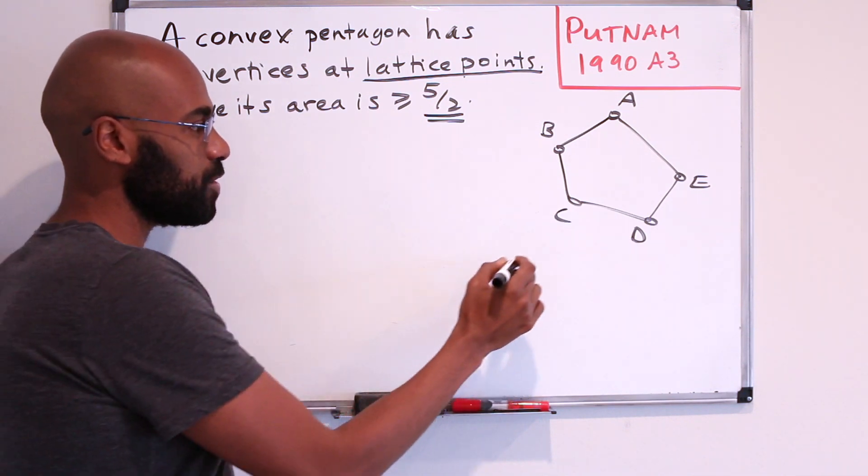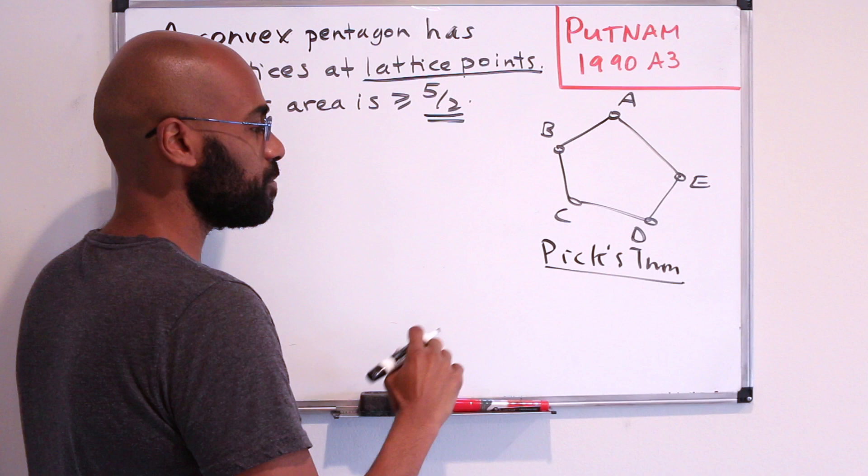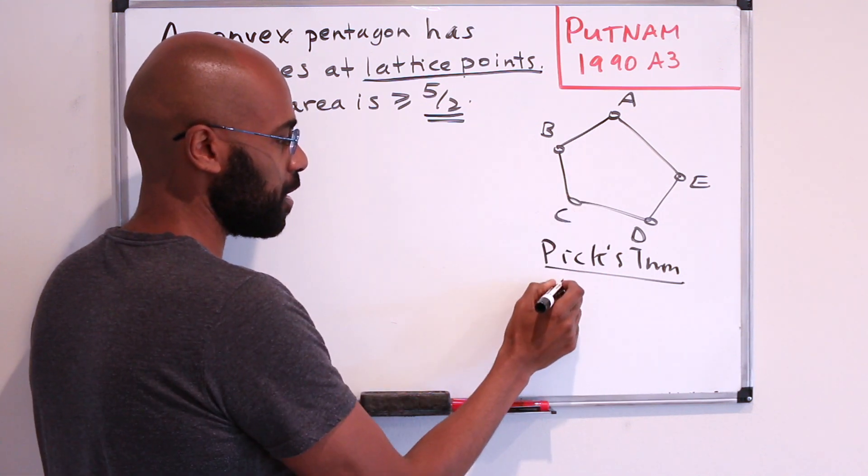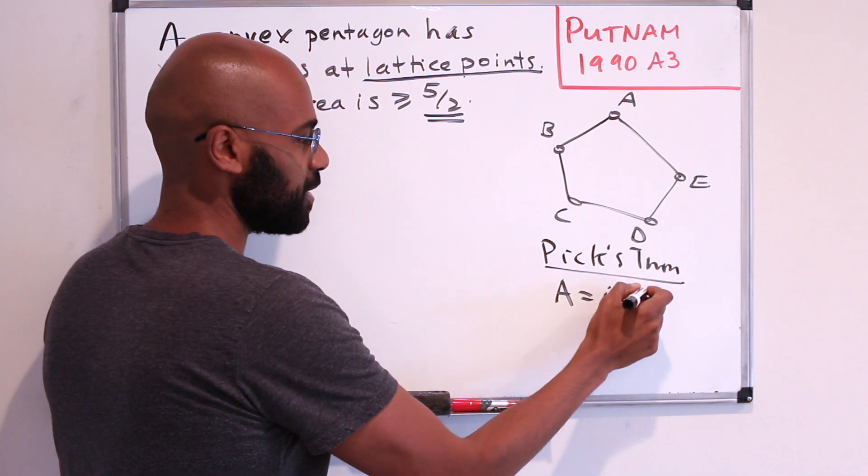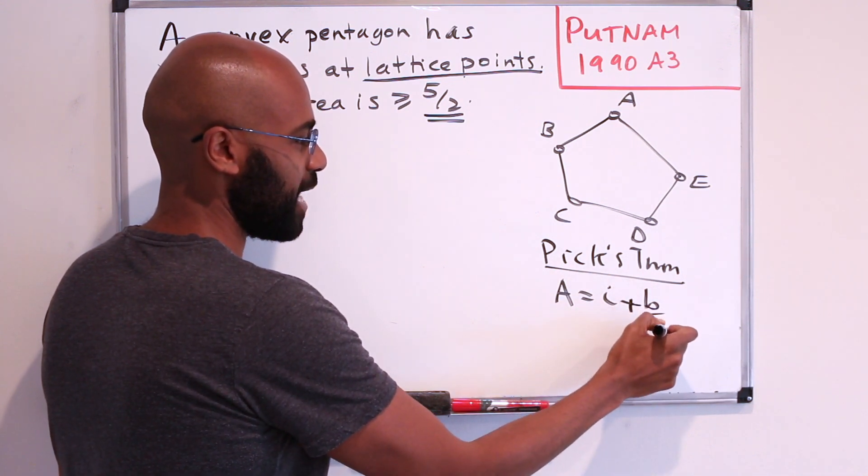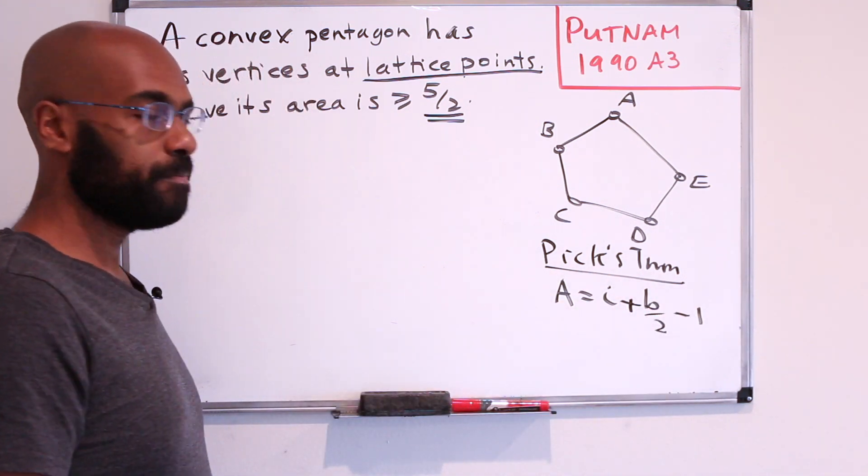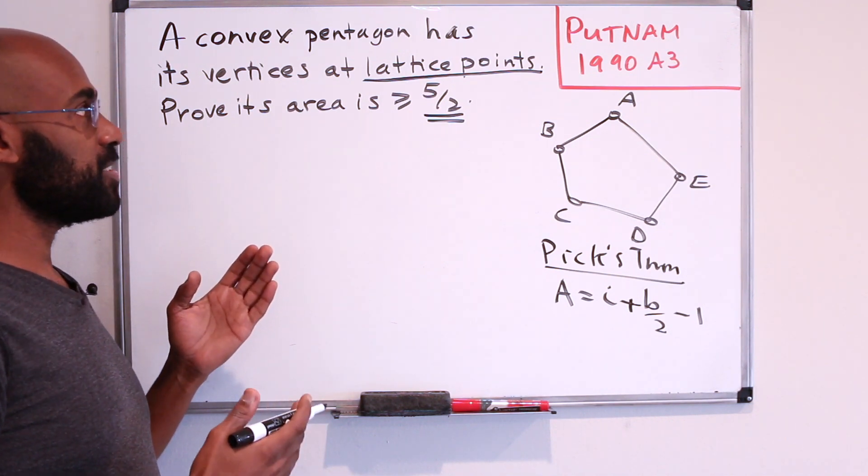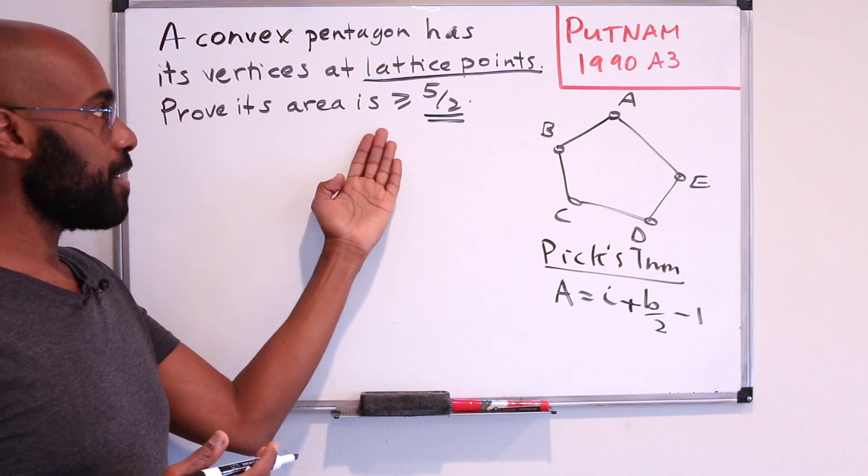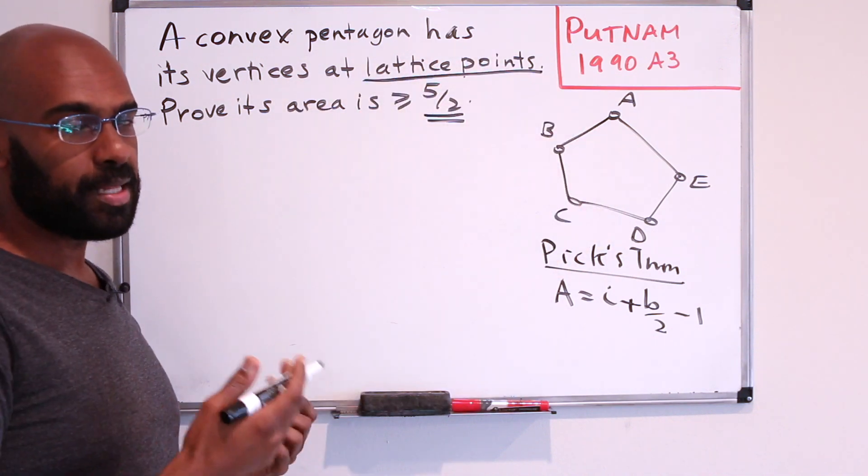And we can do that using what's known as Pick's theorem. Pick's theorem says that if you have a lattice polygon, its area is the number of interior lattice points plus half the number of boundary lattice points minus 1. So it seems amenable to use for this problem because we have this setup that we're trying to find out something about area, and we have some information about lattice points.